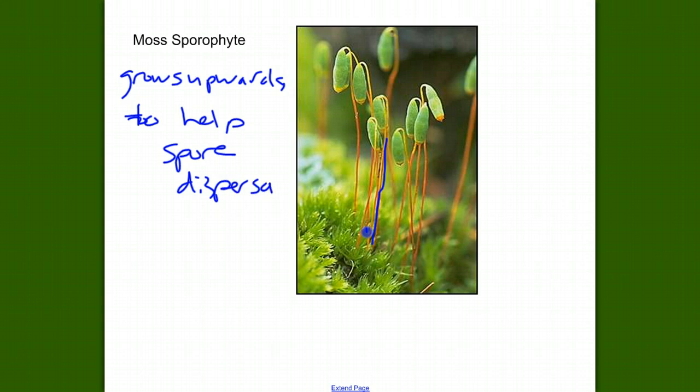It wouldn't do any good to produce a spore down here, have it drop, and try to grow and compete against this thriving adult moss. But if the spores produce here, and as it falls, maybe the wind catches it and carries it way over here, and now we can grow into a new fuzzy green moss over here, not in competition with the parent.